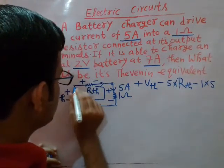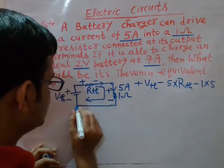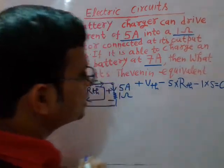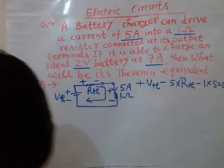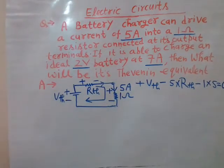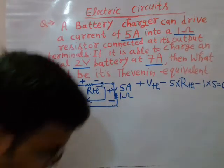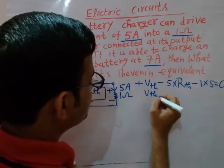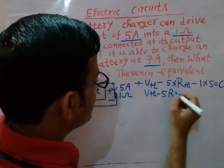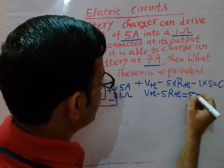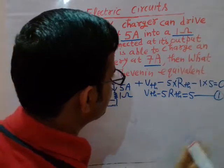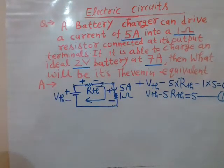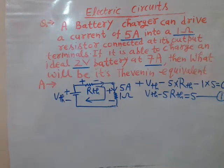The loop completes and this equals zero. So we get Equation 1: Vth minus 5·Rth = 5.